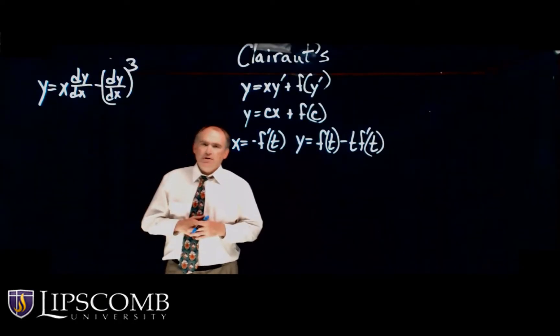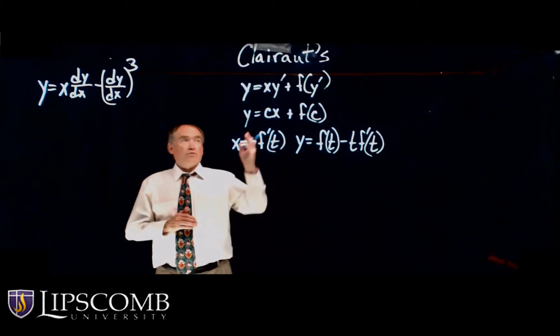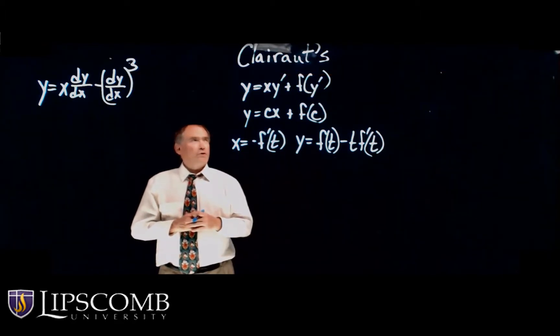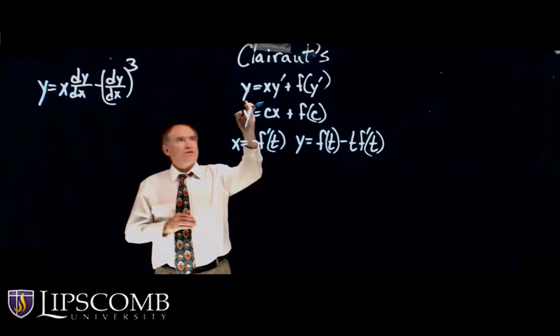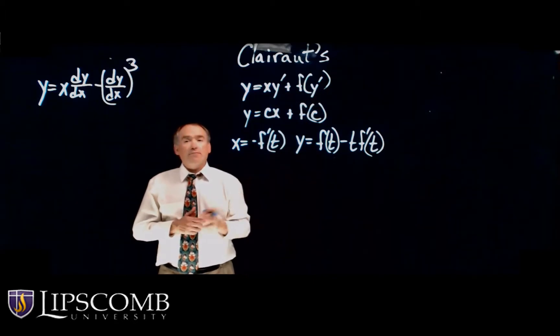Now we deal with another method that comes from Clairaut and it's called Clairaut's equation. Clairaut's equation looks like this: Y equals X times Y prime plus F of Y prime.